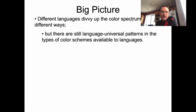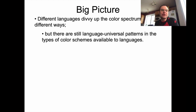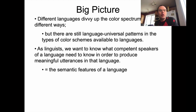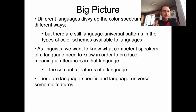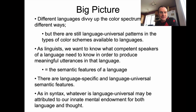The big picture is that different languages divide up the color spectrum in different ways, but there are still language-universal patterns in the types of color schemes available to languages. As linguists, we want to know what competent speakers of a language need to know to produce meaningful utterances — like the semantic features of a language — and also what's language-specific versus language-universal. Whatever is language-universal in semantic features can be attributed to our innate mental endowment for language and thought.